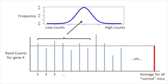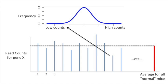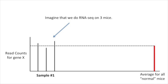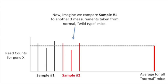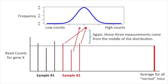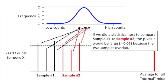We can summarize the distribution of the measurements using this bell-shaped curve. Most of the measurements, which are close to the mean, will come from the middle of this curve. The rare measurement that is significantly larger than the average would come from the right side, and the rare measurement significantly less than the average would come from the left side. Now, imagine that we do RNA-seq on three mice. Collectively, we'll call these three measurements sample number one. Because these measurements are close to the mean, they come from the middle of the distribution.